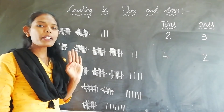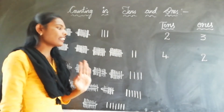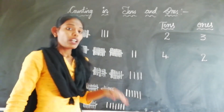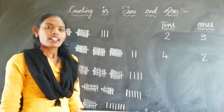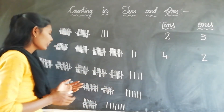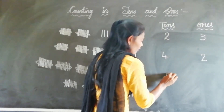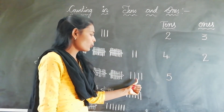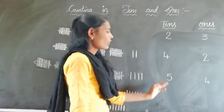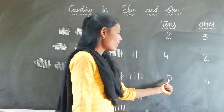Here we have 5 bundles of 10 sticks and 4 loose sticks. Tell me students — how many tens and how many ones do we have? Here we have 5 tens. And how many ones? 4 ones. So 5 tens and 4 ones. So the number is 54.